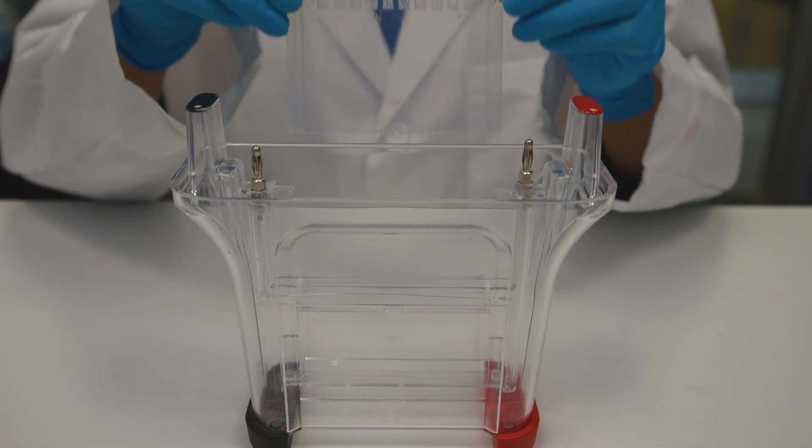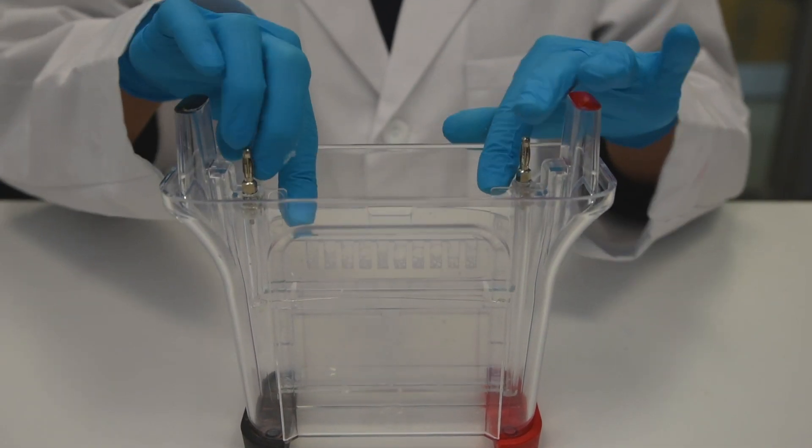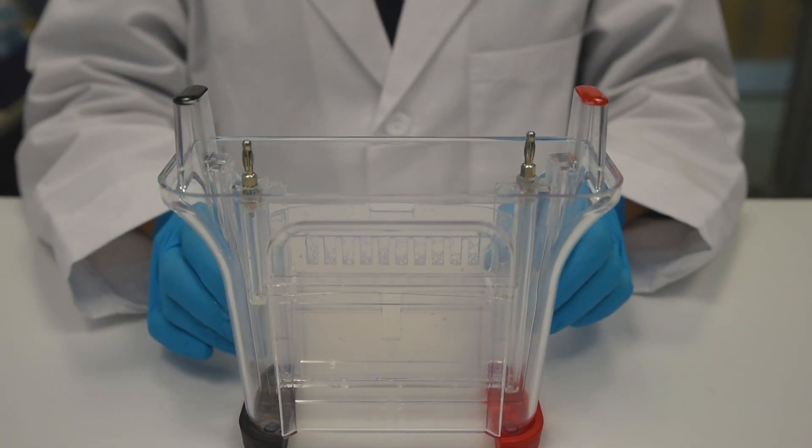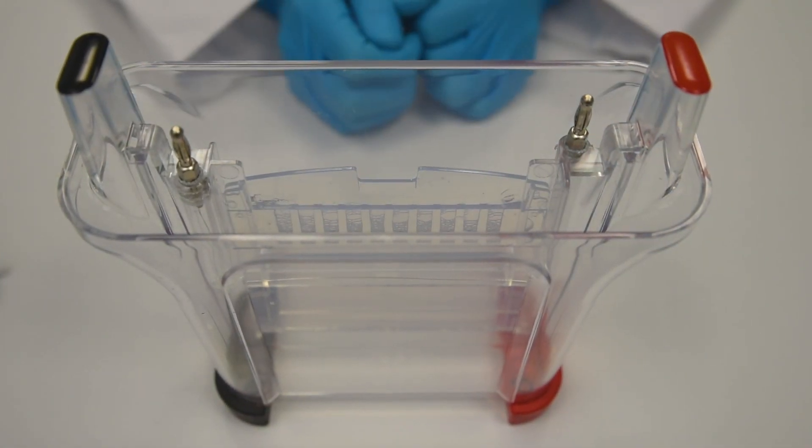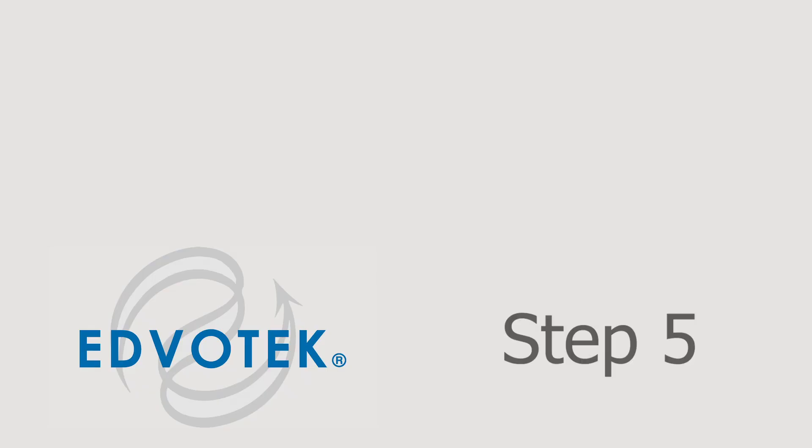Step 4: Insert the gel into the electrophoresis chamber. Orient the gel according to the manufacturer's instructions. For Edvotech vertical electrophoresis chambers, the short plate should face the interior.